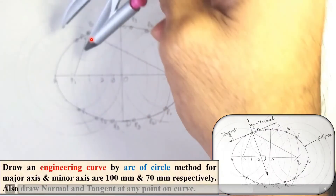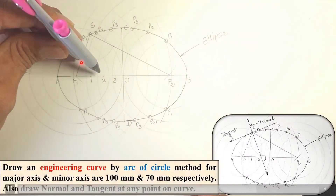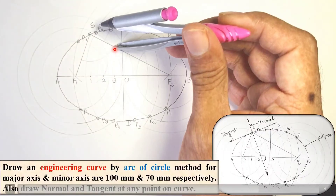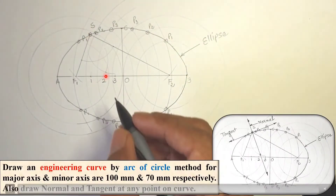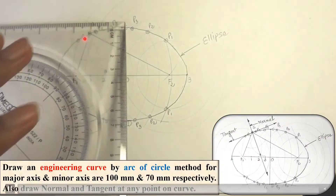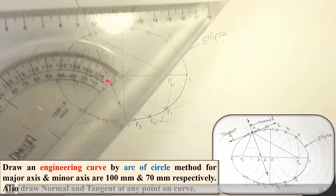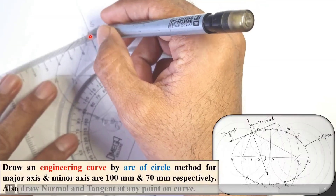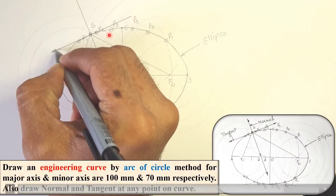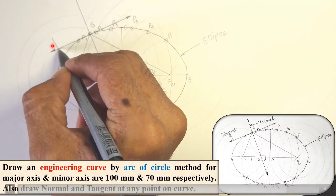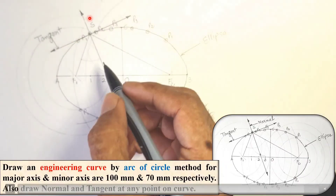Take any length randomly and draw an arc with S as center. With the same radius, draw arcs from each of the two intersection points on SF1 and SF2 to get an intersection point. Join S to that intersection point — this gives you the normal. Then draw a perpendicular to the normal at point S by aligning the set square; this gives you the tangent. Label the normal and the tangent accordingly.